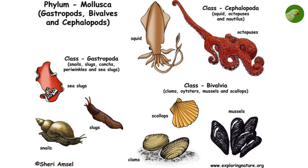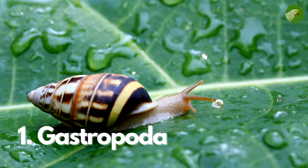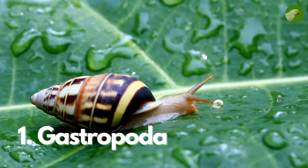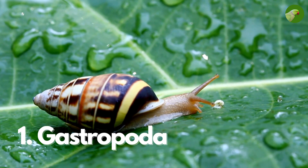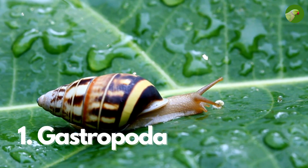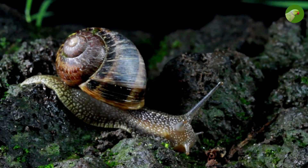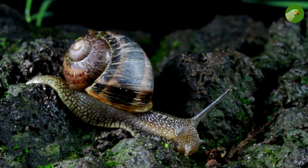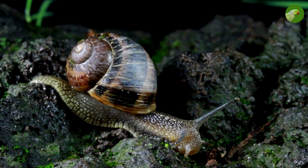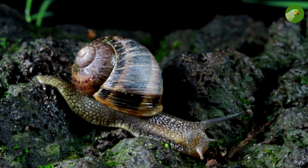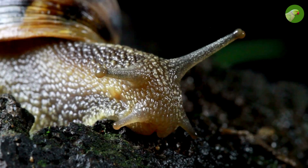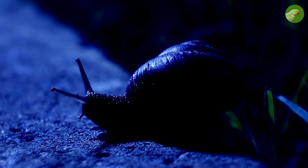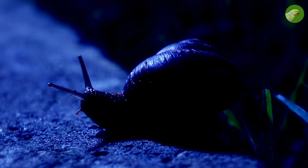1. Gastropoda — Gastropods. Characteristics: Univolve, single-shell mollusks with a coiled or spiraled shell in most species. A distinct head with sensory tentacles and a well-developed foot for crawling. Examples: Garden snail (Helix aspersa), Cone snail (Conus species), Blue sea slug (Glaucus atlanticus).